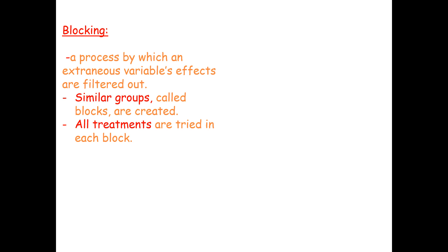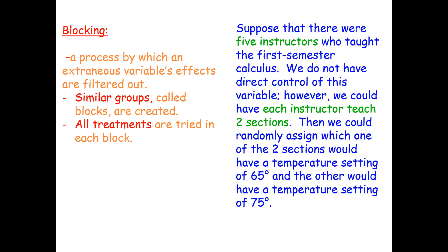In the context of our experiment, suppose there were five instructors who taught first semester calculus. We don't have direct control over this variable; however, we could have each instructor teach two sections. Then we could randomly assign which one of the two sections would have a temperature setting of 65 degrees, and the other would have a temperature setting of 75 degrees.